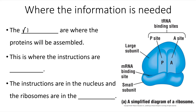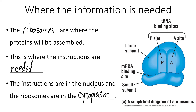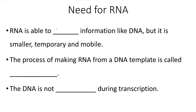The ribosomes are where the proteins will be assembled — this is where the instructions are needed. The instructions are in the nucleus and the ribosomes are in the cytoplasm. This is why we need RNA. RNA is able to store information like DNA, but it is a smaller, temporary molecule and it is mobile.